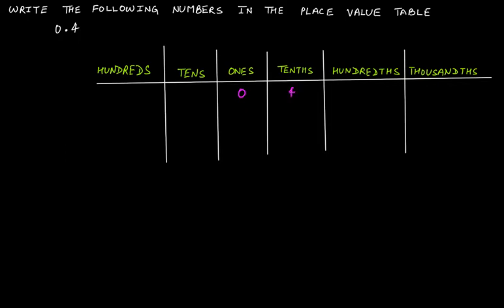Let's take another example: 0.46. In this one, 0 is at the ones place, 4 is at the tenth's place, and 6 is at the hundredth's place.